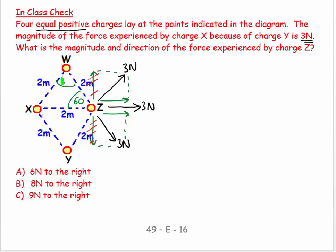If this is an equilateral triangle, then these angles are all 60, and so we see that means that this angle here is 60, it's a straight line, and this angle here is 60.